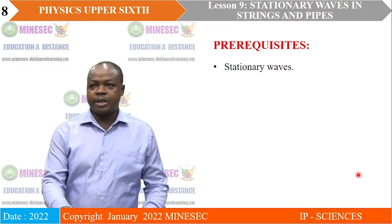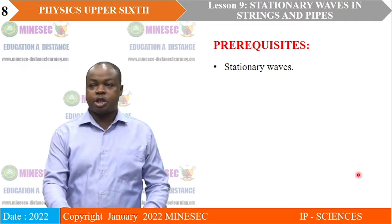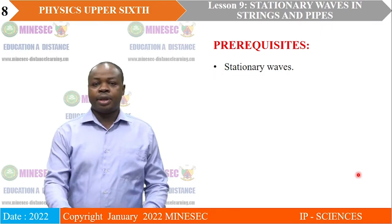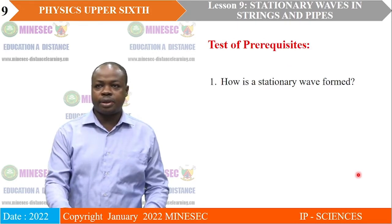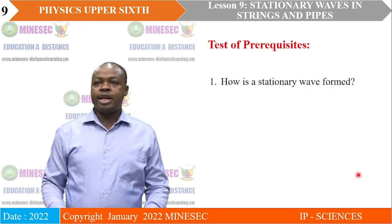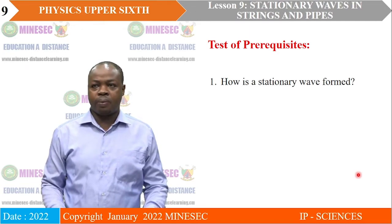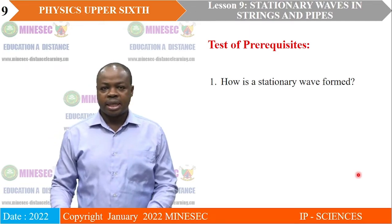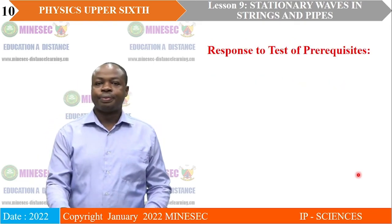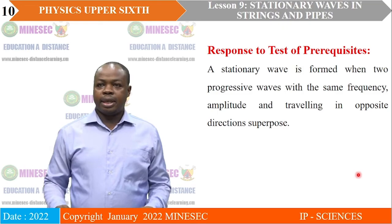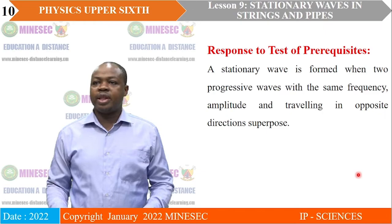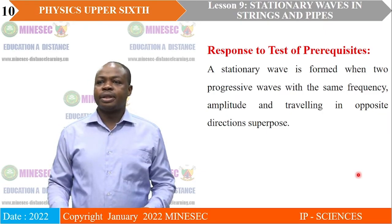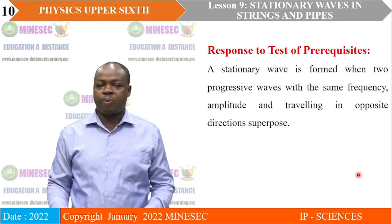The previous knowledge required for this lesson is stationary waves. Since you have done it in the previous lesson, you should be able to answer: how is a stationary wave formed? A stationary wave is formed when two progressive waves with the same frequencies, amplitude, and traveling in opposite directions superpose.